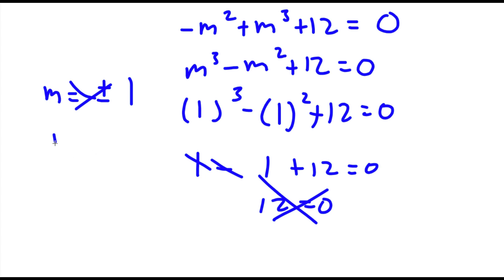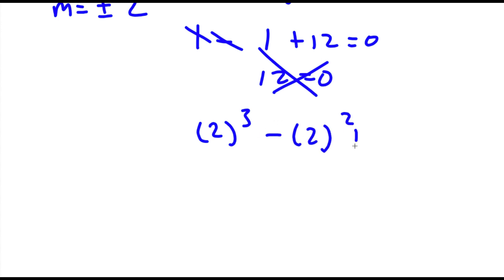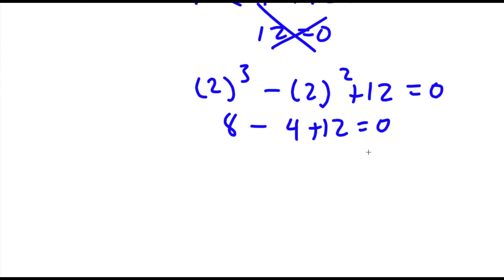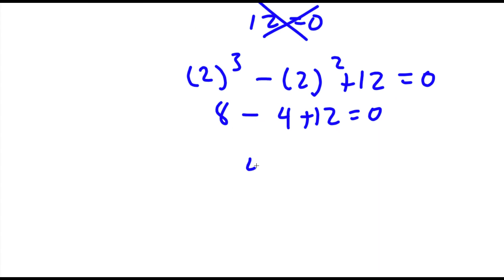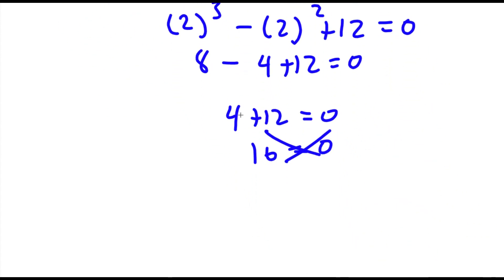Now I'm going to try positive and negative 2. For positive 2: 2 to the power of 3 minus 2 squared plus 12 is equal to 0. 2 to the power of 3 is 8, and 2 squared is 4, so I have 8 minus 4 plus 12 equals 0, which gives 16 equals 0. This is wrong, so positive 2 doesn't work.